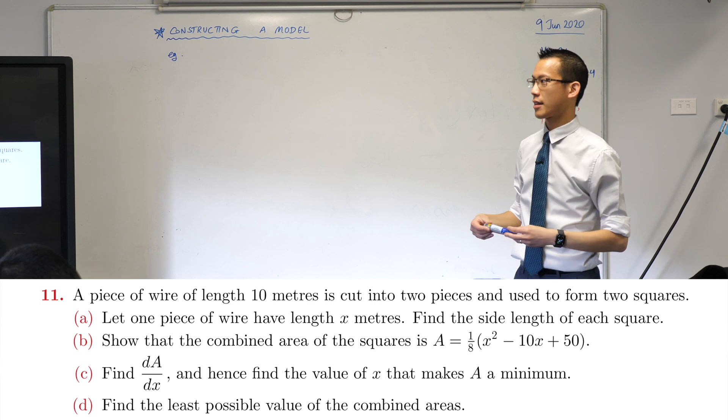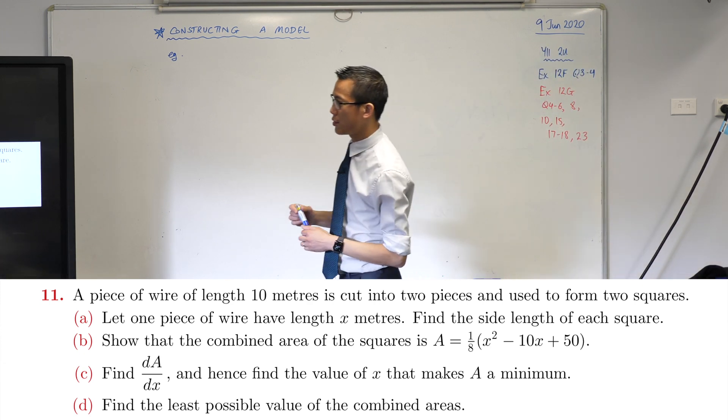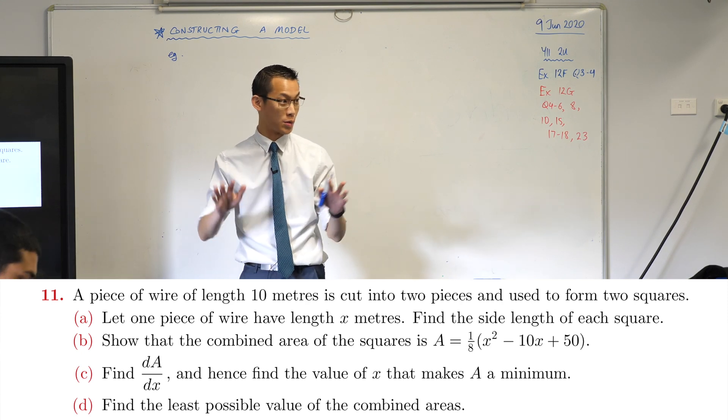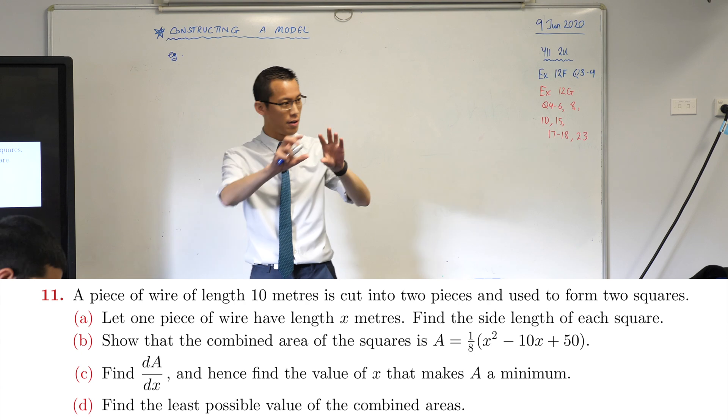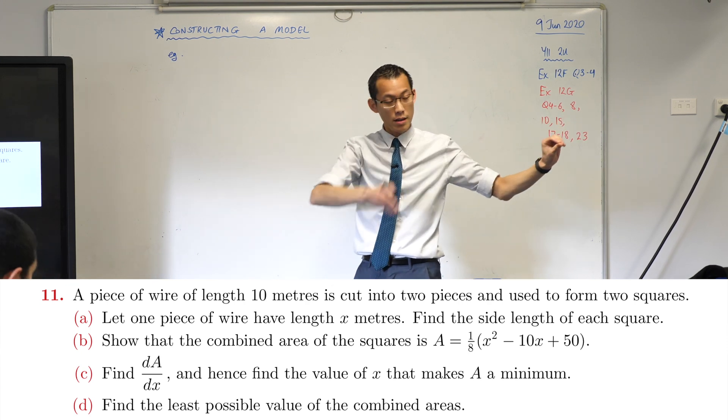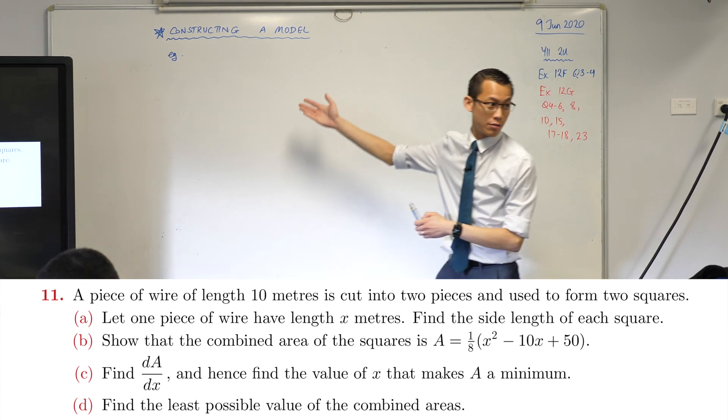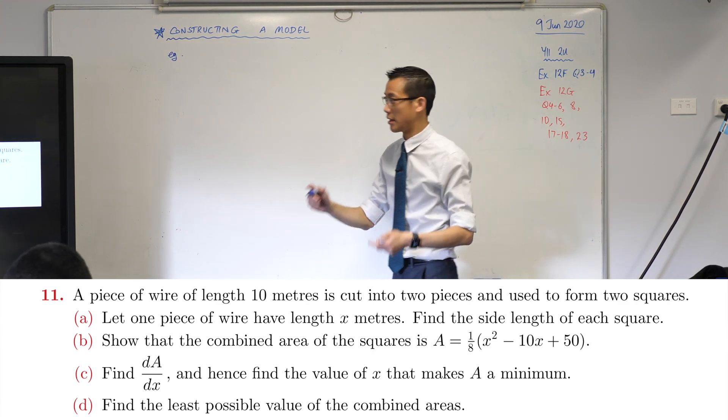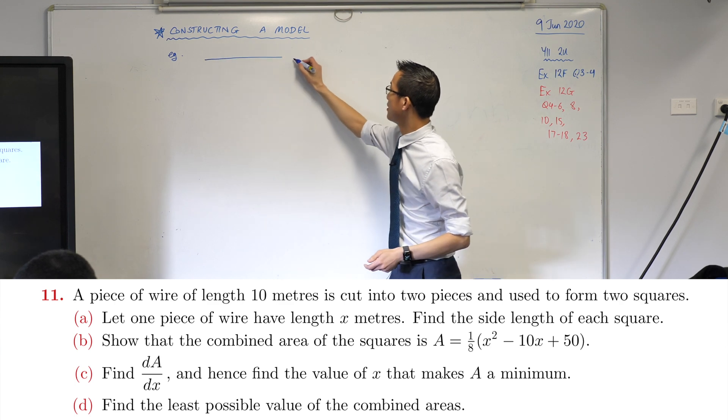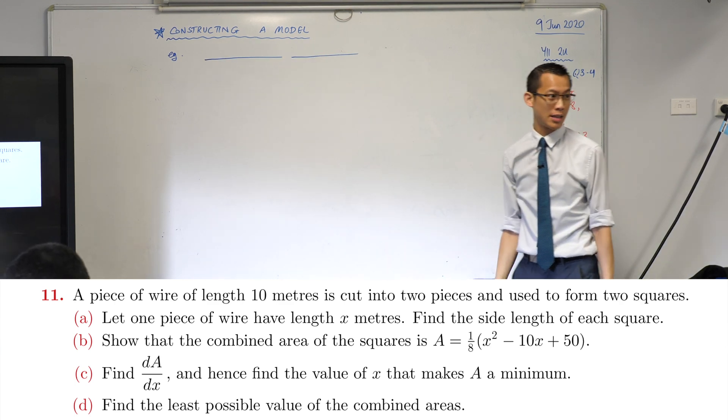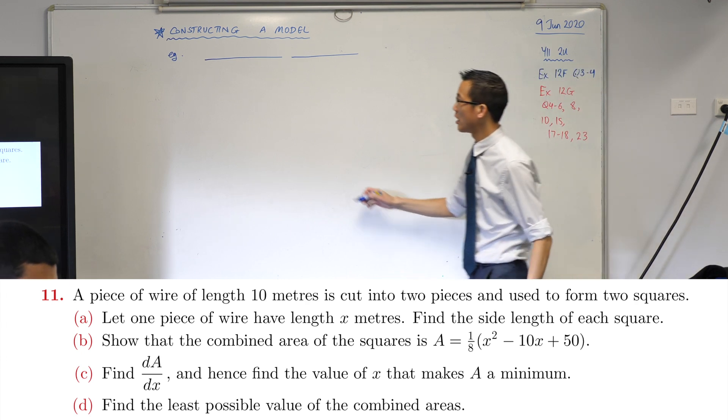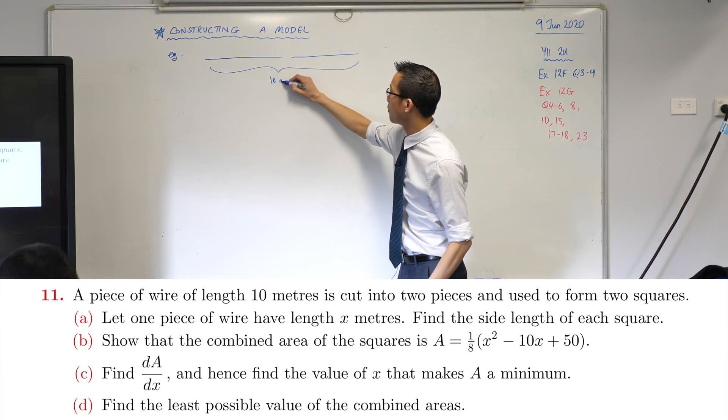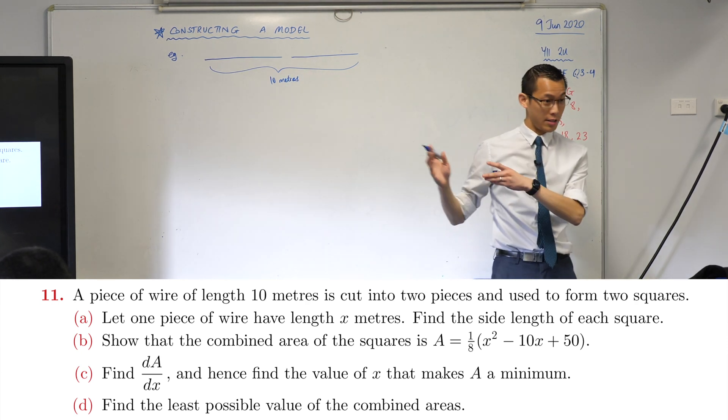It says a piece of wire of length 10 meters is cut into two pieces and used to form two squares. Pause—there's a lot of information even just there. You imagine a long straight piece of wire and then they cut it. So the first thing I'm going to put in my working is not even words, it's just a piece of wire that's been cut into two sections. Here's my wire—it's 10 meters all up. Here's the situation.